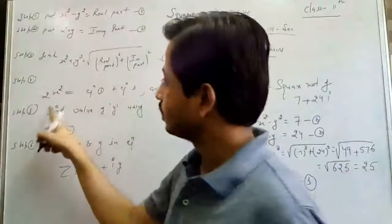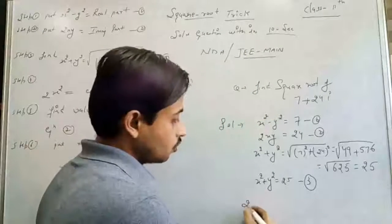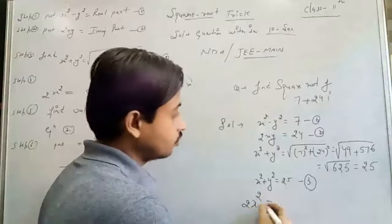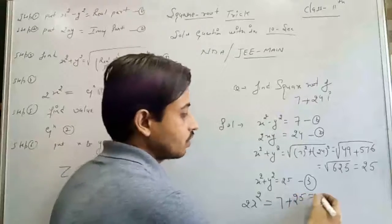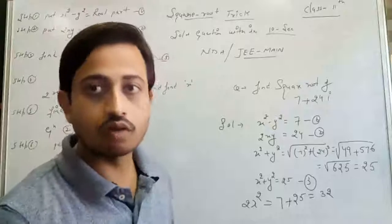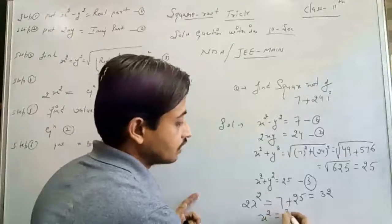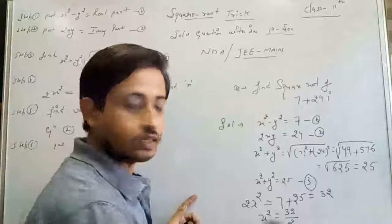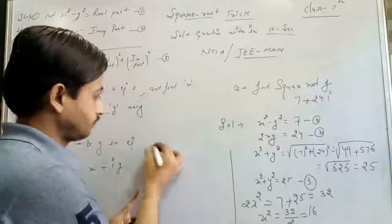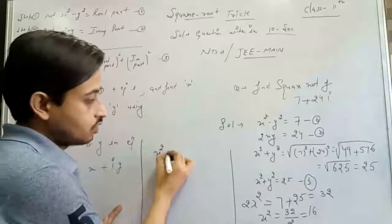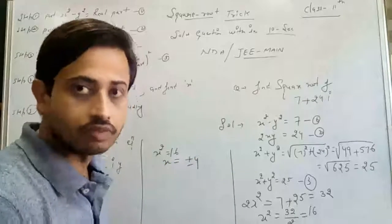Now the next step: solve 2X² equals equation 1 plus equation 3, which is 7 plus 25, equal to 32. Dividing both sides by 2, X² equals 16. Therefore X equals plus or minus 4.